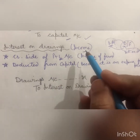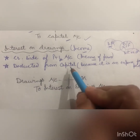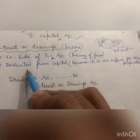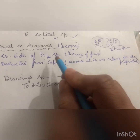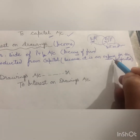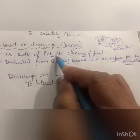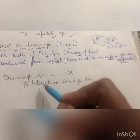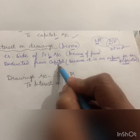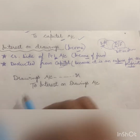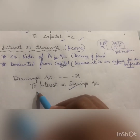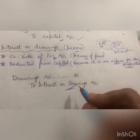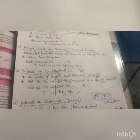Since the proprietor pays interest on drawings to the firm, it will be deducted from the proprietor's capital account — capital is shown on the liability side of the Balance Sheet. The reason is that interest on drawings is an expense for the proprietor. It is income for the firm (P&L credit side), and an expense for the proprietor. Any income is always credited, because the rule is: credit all incomes and gains.